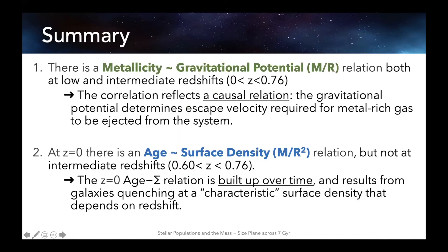To summarize: we've spent much of my PhD identifying, analysing, and hypothesizing about these two relations. Firstly, the metallicity–gravitational potential relation exists at both low and intermediate redshifts, and is a causal relation because the gravitational potential determines the escape velocity required for metal-rich gas to be ejected and avoid being recycled into later generations. At redshift zero there is a strong correlation between age and surface density, but not at intermediate redshifts — because this age–surface density relation is built up over time as a consequence of galaxies quenching at characteristic surface densities that depend on redshift.